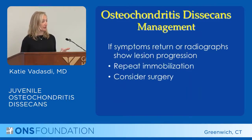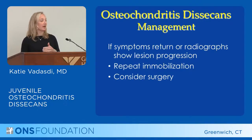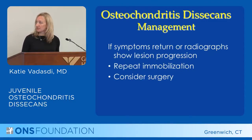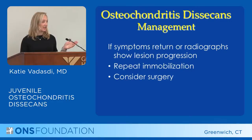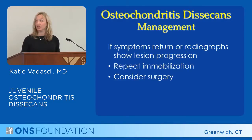If symptoms return, it may be appropriate to get x-rays or an MRI. Sometimes you have to regress and go back to phase two or phase one if it appears that the lesion is not healing or the patient has symptoms. If they haven't healed in that six-month period and you see the lesion either staying the same or progressing, then surgery may be appropriate even if it is a stable lesion.